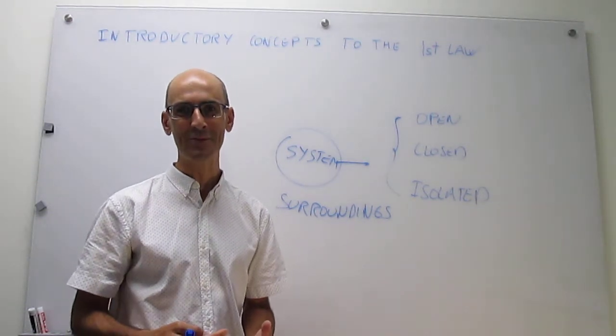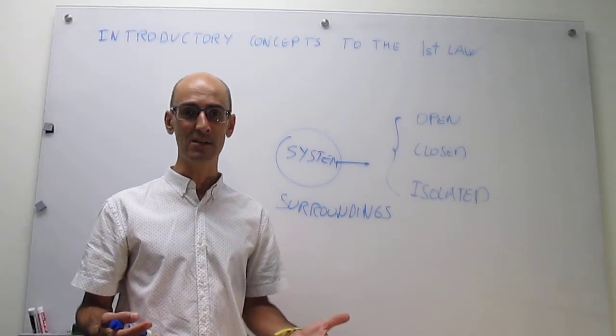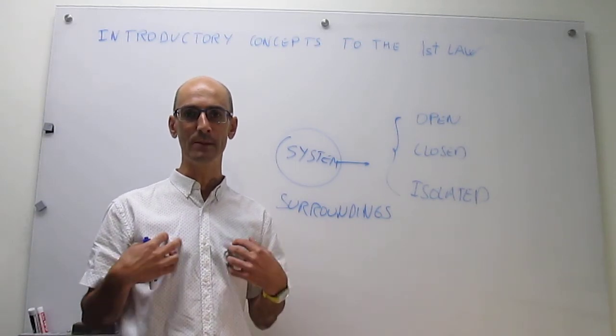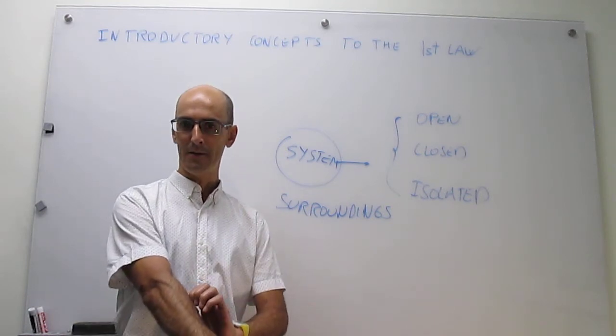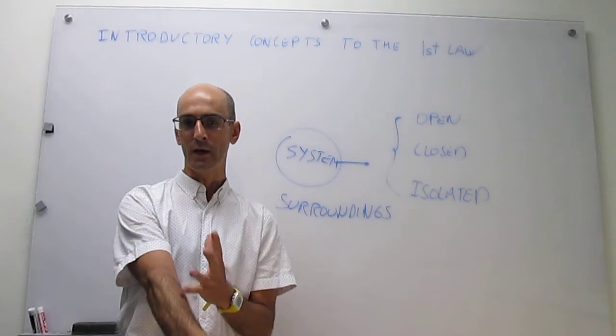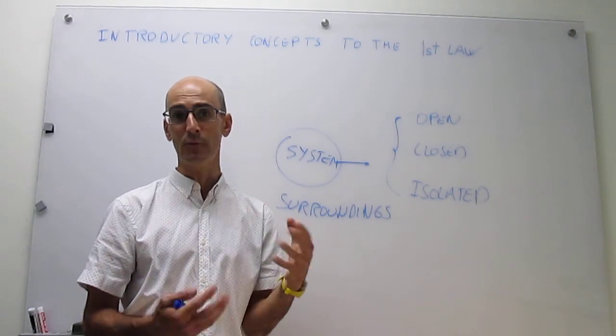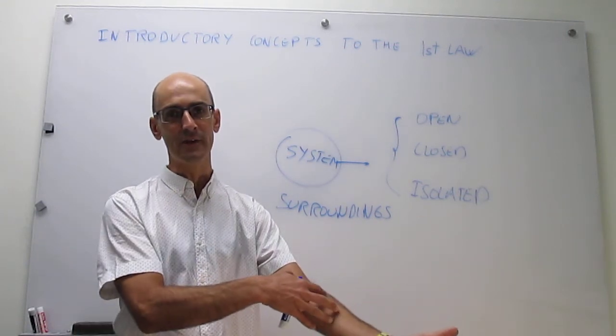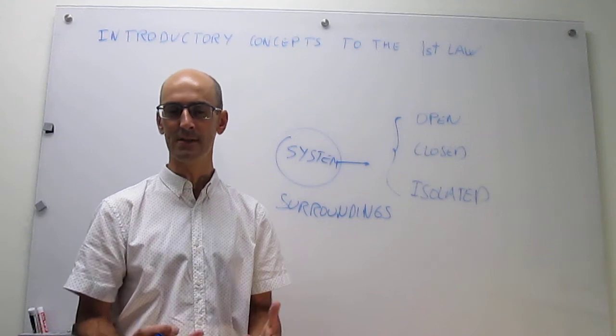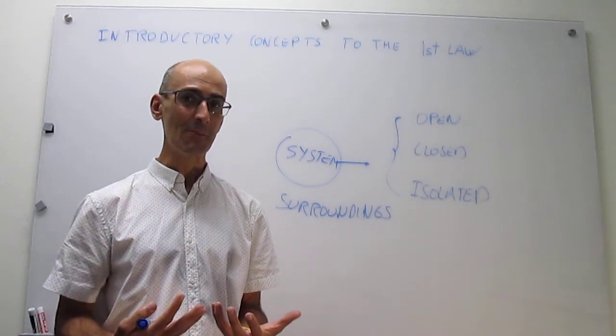Now, a human being would be an example of an open system where we strongly exchange energy. When we, for example, are sweating, we actually are radiating energy, or when we get very hot, we radiate energy to the surroundings. Or maybe we're cold and we go out in the sunshine, we're actually getting energy from the surroundings into the system. So there's obviously energy transfer.